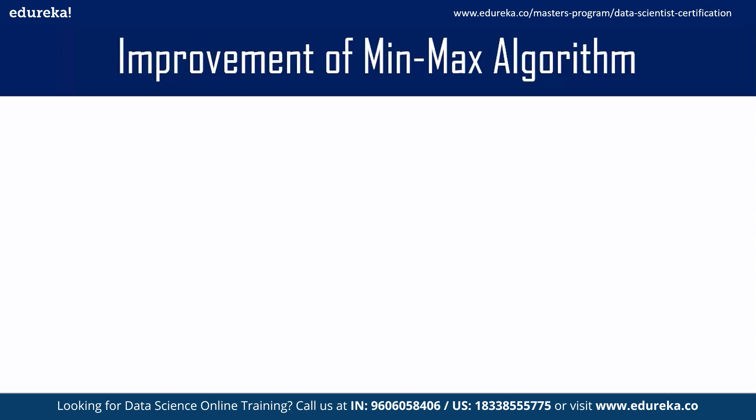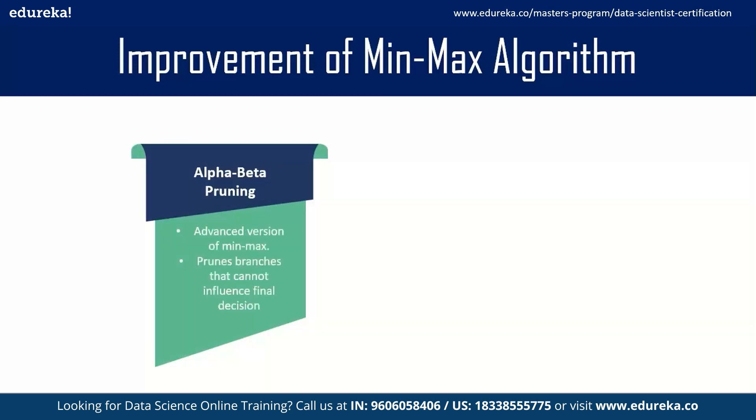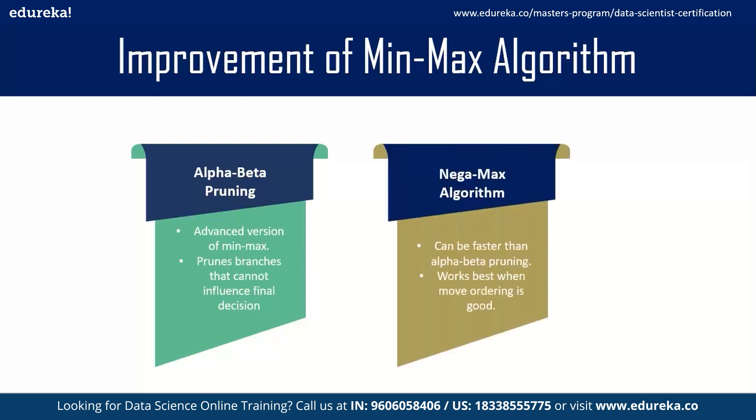So now moving on to the improvements over MinMax algorithm. There are various algorithms that are improvements or optimization algorithms for MinMax. The first one is alpha-beta pruning. This is an advanced version of MinMax algorithm that overcomes some of the limitations. It prunes away the branches that will not influence the final decisions and this helps in reducing the complexity. Another improvement is the negamax algorithm, also known as nega-scout. This can be faster than alpha-beta pruning and works best when move ordering is good. So it relies on accurate move ordering. These are the improvements of MinMax algorithm, and the goal of all these algorithms is to identify all the possible strategies and find the best one accordingly.